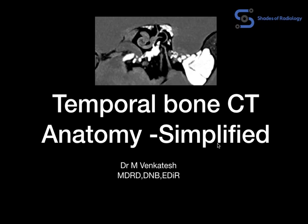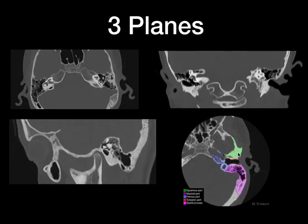Hello everyone, welcome back to Shades of Radiology. Today I am going to discuss the anatomy of CT temporal bone. Before going to temporal bone, it is must and should to look in the three planes — the axial, the coronal, and the sagittal planes — because various small and tiny structures are visible in different planes.